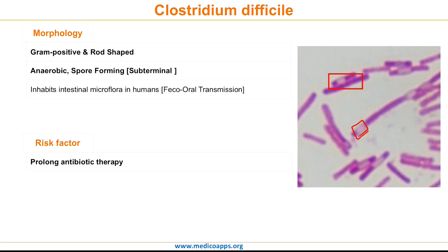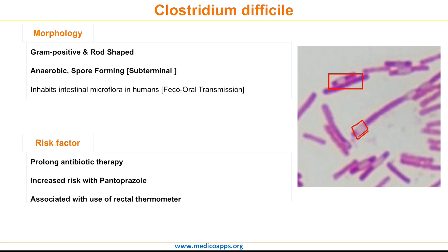The most important pathogenic factor responsible for Clostridium difficile becoming pathogenic is prolonged antibiotic therapy. Prolonged antibiotics given especially to patients admitted to hospital can lead to pathogenicity of Clostridium difficile. Concomitant use of pantoprazole further increases the risk, and use of a rectal thermometer is also associated with pathogenicity and spread of Clostridium difficile.